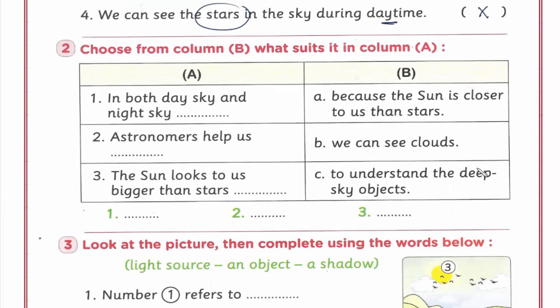Question number two: Choose from column B what suits it in column A. In both day sky and night sky - سواء بالليل أو بالنهار - بنقدر نشوف the clouds. يبقى number B.